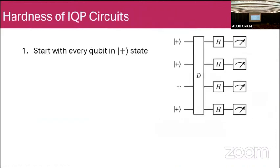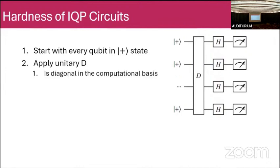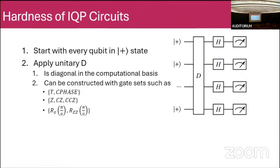I'm going to focus on IQP circuits. What's an IQP circuit? You start with every qubit in the plus state — an equal superposition of every computational basis state. Then you apply a diagonal unitary, diagonal in the computational basis. This unitary is usually constructed with discrete gate sets — for example, T, controlled phase, Z, CZ, CCZ. These generate such a diagonal unitary. Finally, you measure in the Hadamard basis. State prep and measurement are in the Hadamard basis, and all intermediate gates are diagonal.